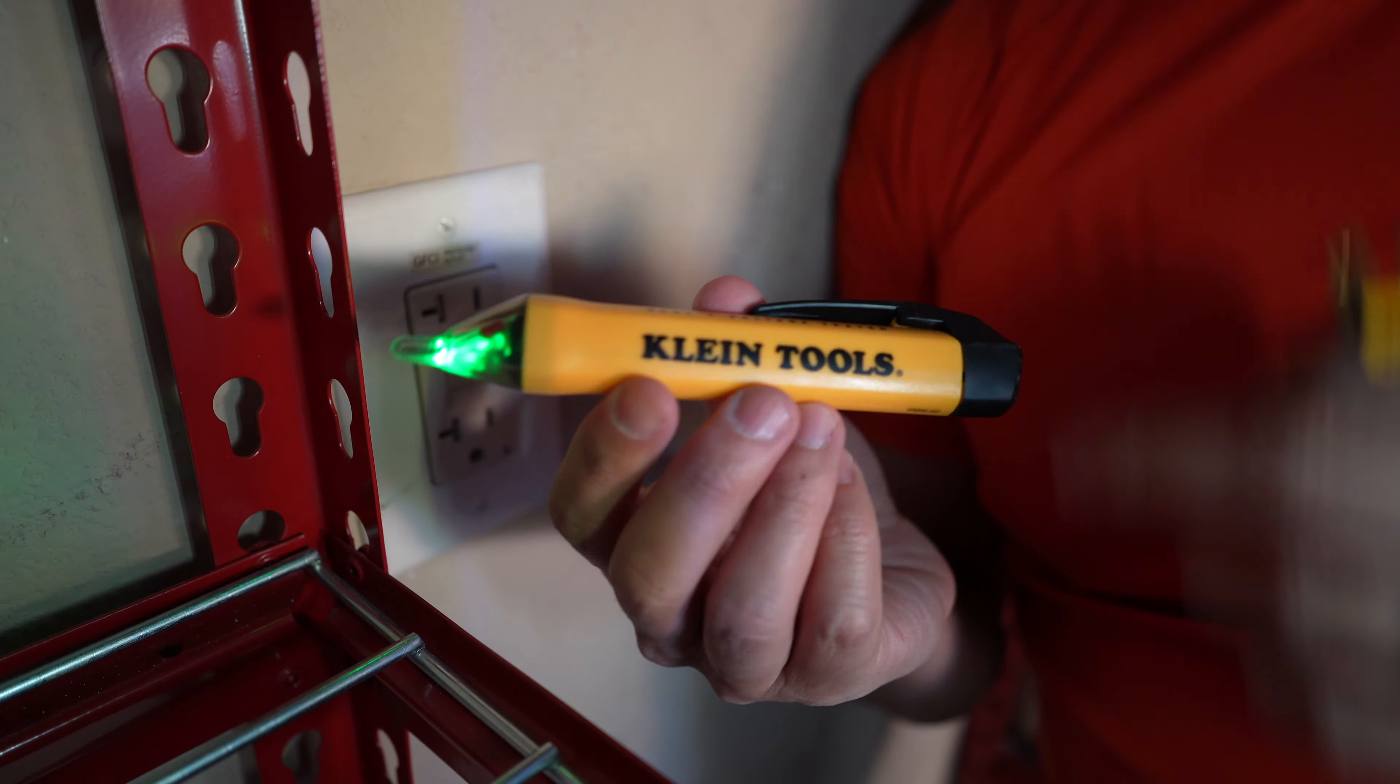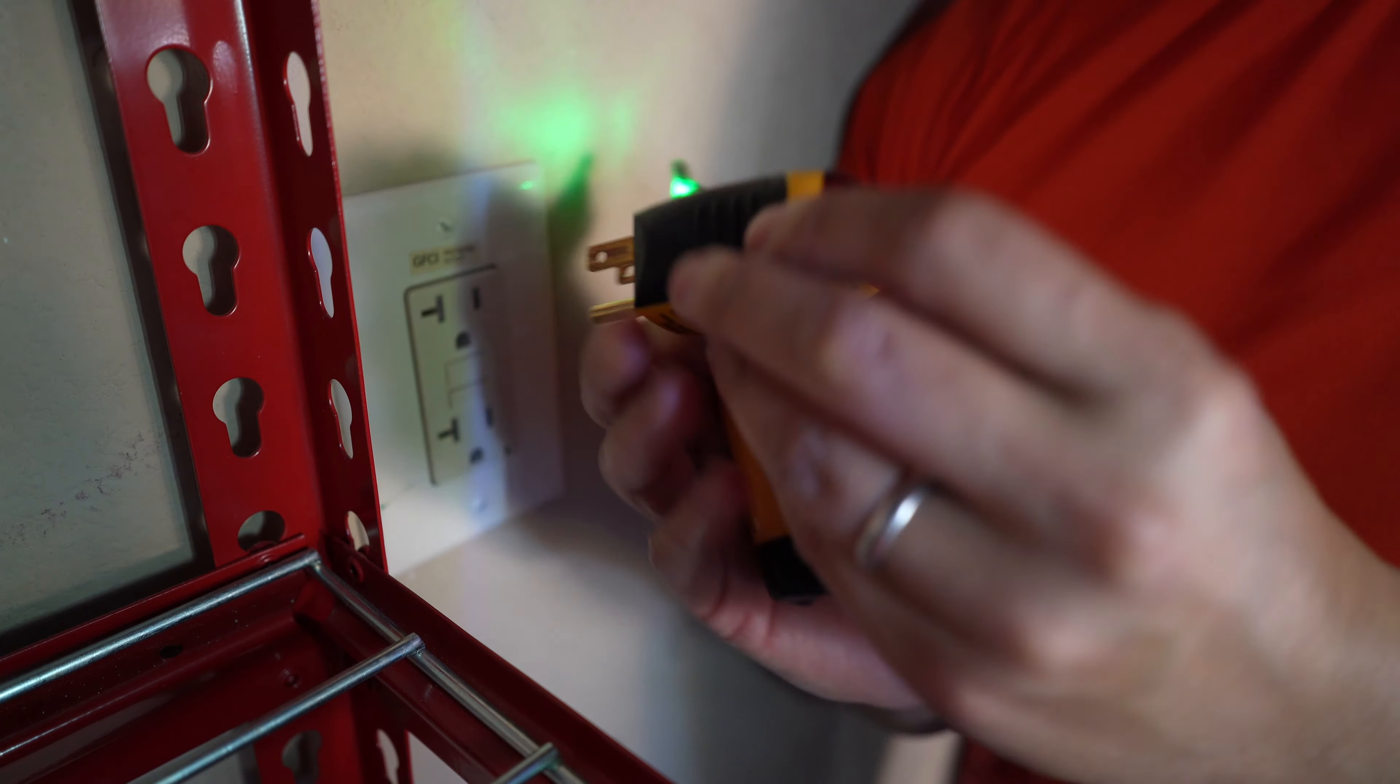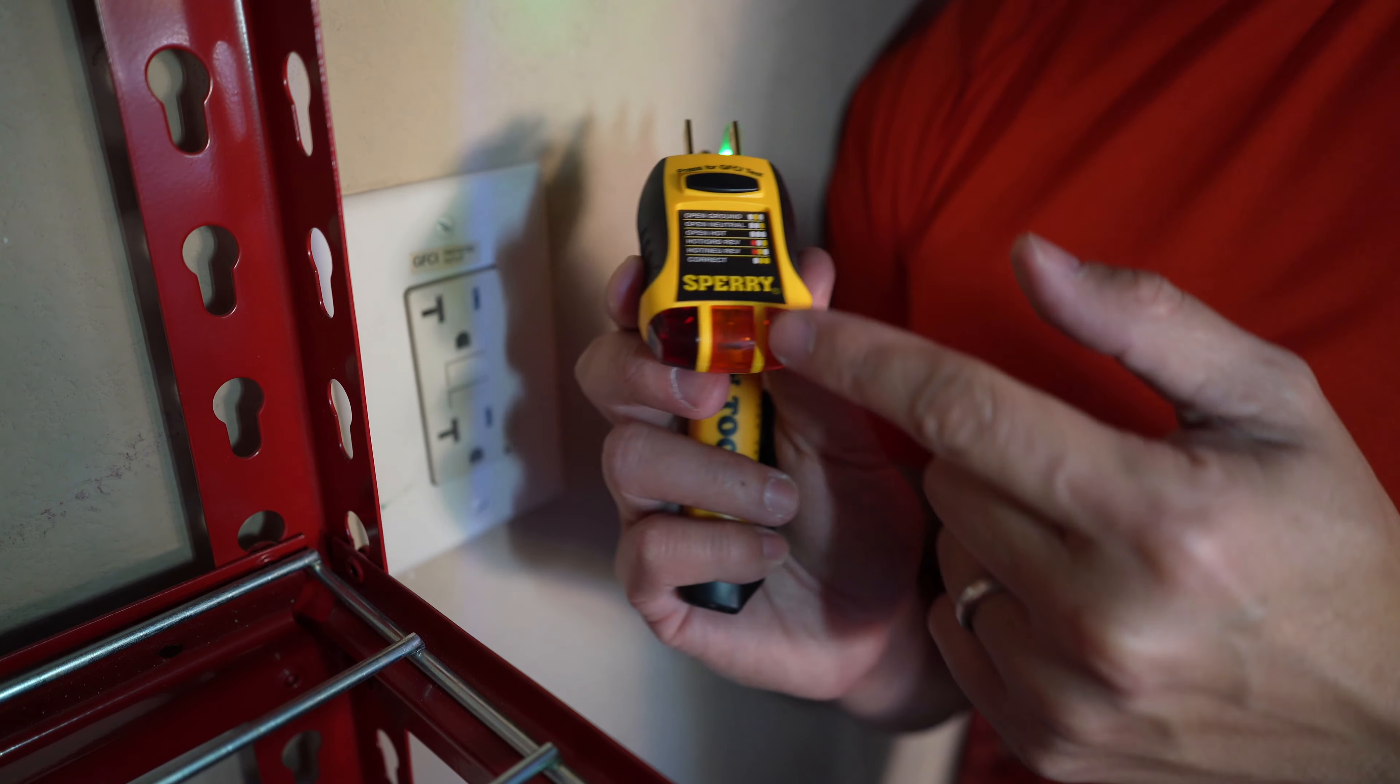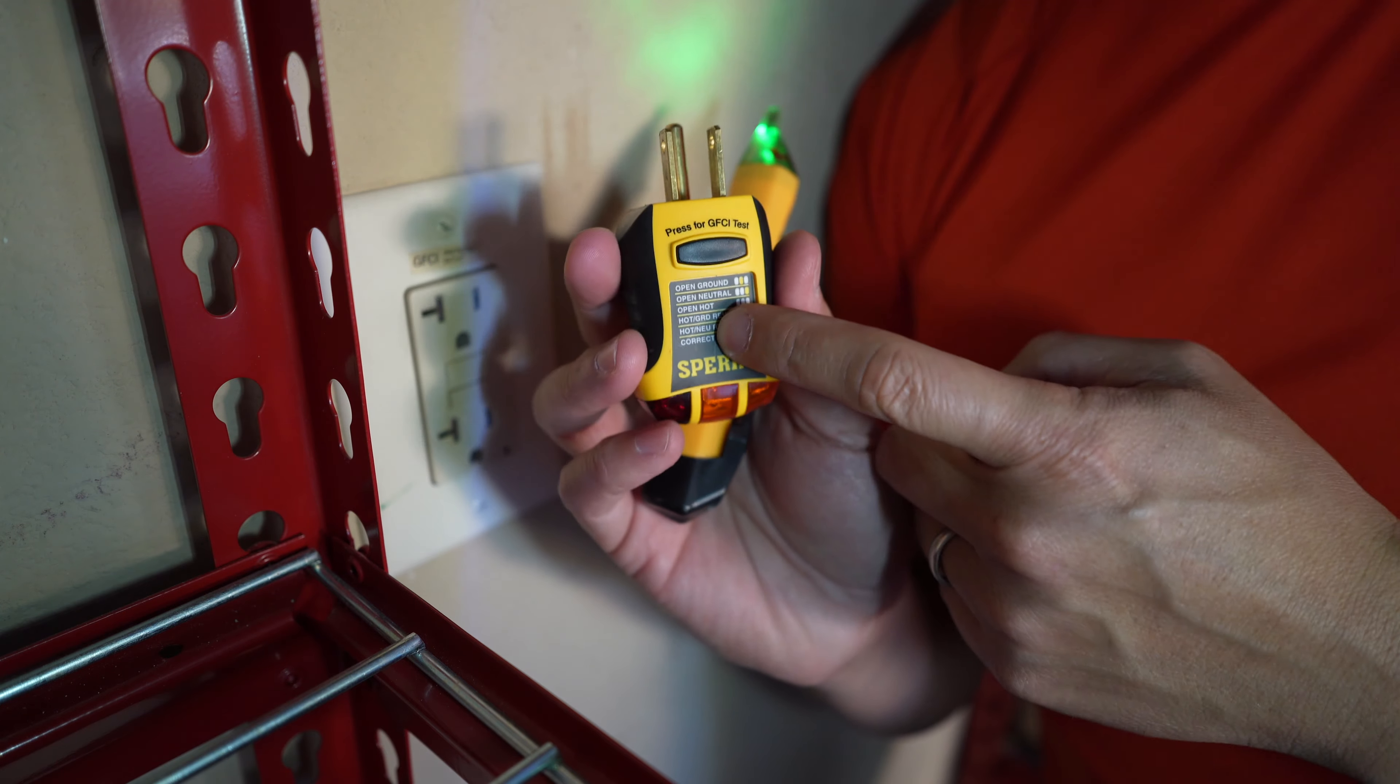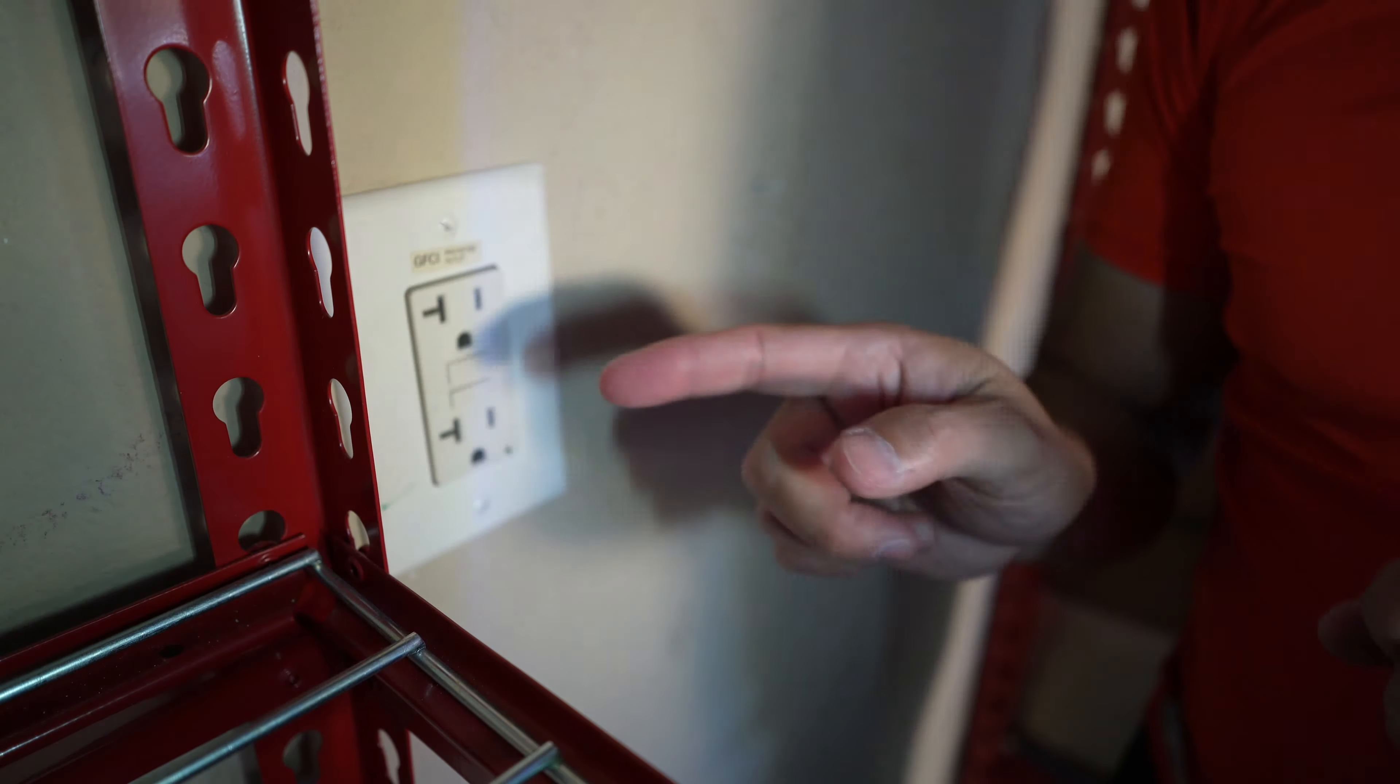So again, I totally recommend you guys getting these Klein tools if you're gonna mess around with electrical outlets. And this is a GFCI tester, so it'll give you a bunch of different indicators on the lights here and it'll tell you if your receptacle is good or not. Electrician recommended these tools, so I am using it.